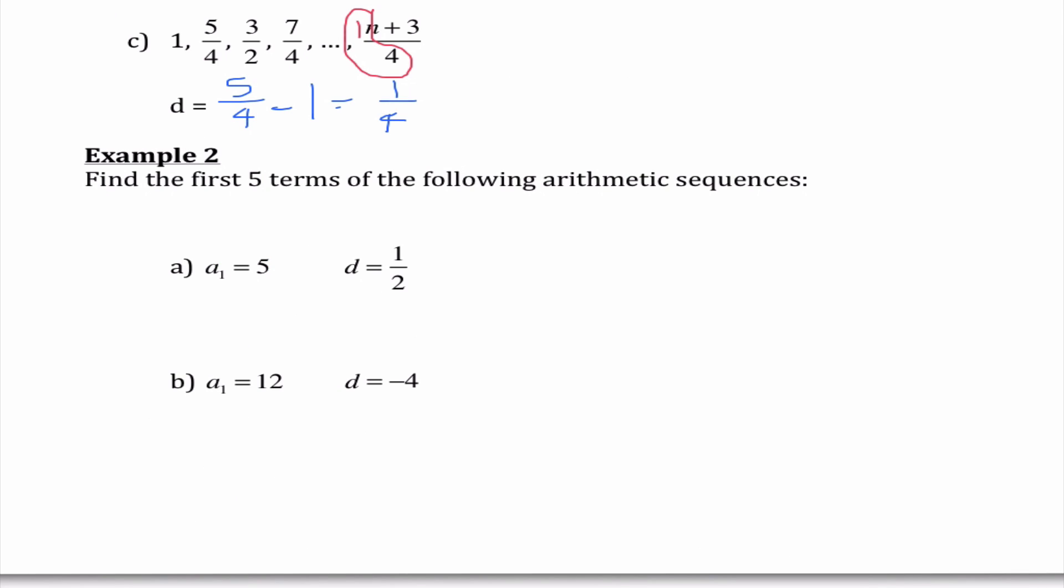Another thing we're going to have to do is find the first five terms of a sequence. Notice they're giving us the first term and the common difference. The common difference equals any term, so I'm going to use a sub 2 minus our first term. To get to the second term, I'm taking my first term and adding the common difference. So 5 is the first term, 5 plus 1 half is 5.5, then 6, then 6.5, and then 7. The nice thing is as soon as we know the common difference, we can just keep adding that to each term.